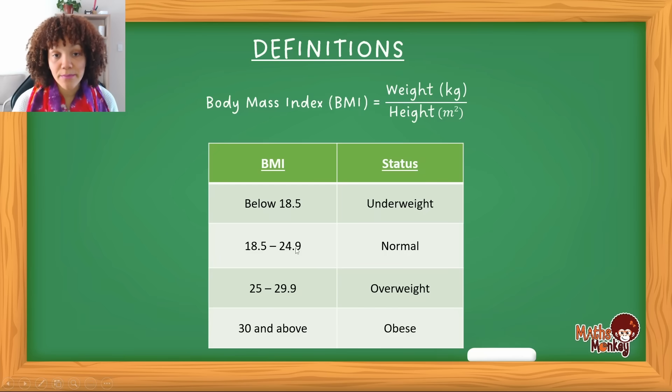So if this person does the BMI calculation and they notice theirs is 23, they fall in the normal category. That means that they are a healthy weight for their height. So this is pretty much how you would answer the questions.